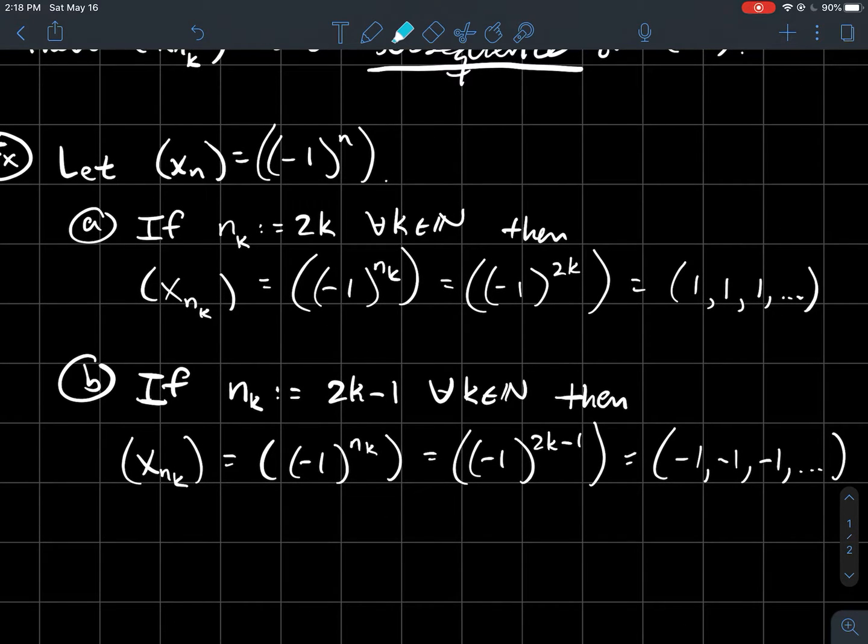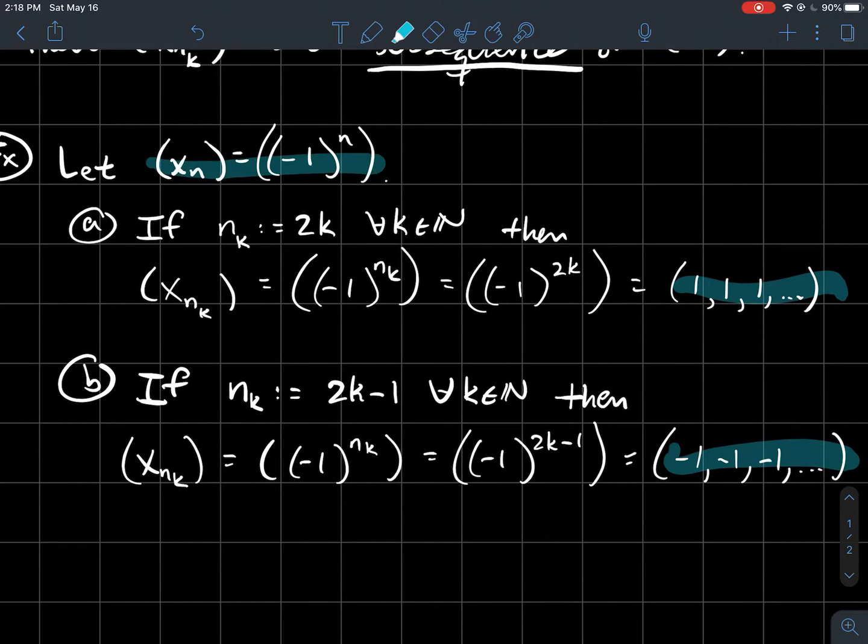You'd get minus one to the 2k minus one power for the subsequence here, which is just the constant subsequence minus one, minus one, minus one. So these that I've highlighted are two subsequences of this sequence xn.